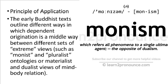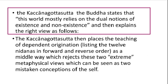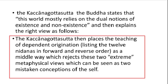According to the Kaccānagotta Sutta, Buddha believed that the world is mainly based within dualism and pluralism. The Kaccānagotta Sutta regards the 12 nidanas as the teaching of dependent origination and causation, and also rejects metaphysical views about the self, atman, or soul — concepts that are beyond ordinary logic and cannot be analyzed using ordinary logic.